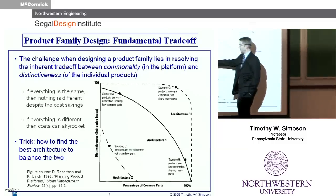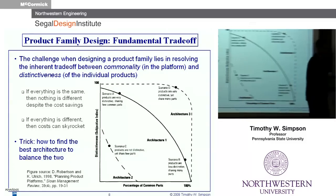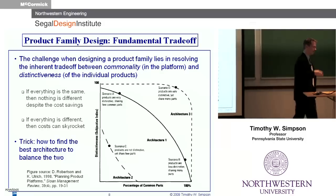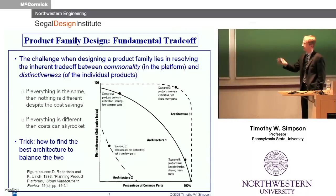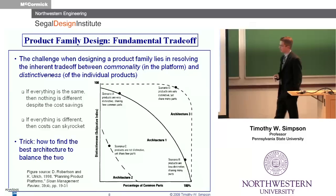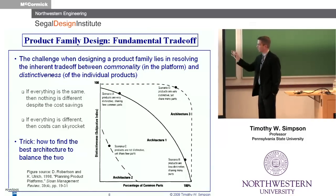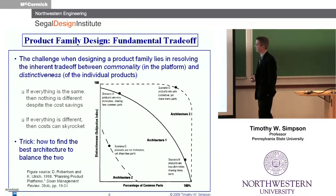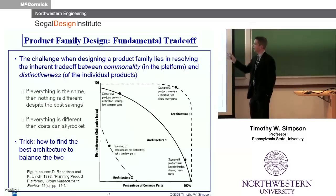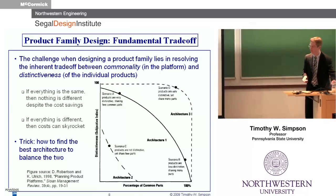And the flip side: if everything is different, you start running into problems — different product lines, tooling and fixtures, et cetera — and your costs are going to potentially skyrocket. The trick is really how do you find the best architecture to balance the two? Coming from the design side, I'm asking: how do we define the architecture for the product — for the coffee maker, the ice scraper, or whatever — that is going to allow us to achieve the best trade-off between those two?